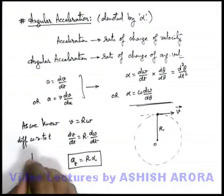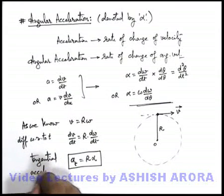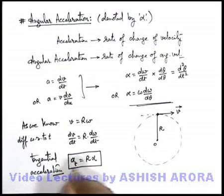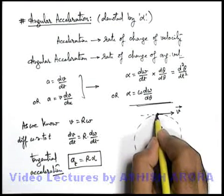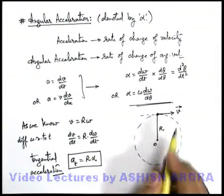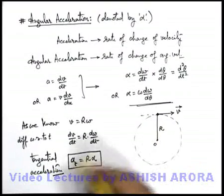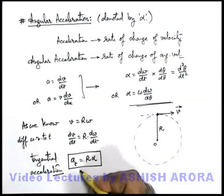This tangential acceleration, a_t, equals r·alpha. This is a new term — we are going to study about tangential acceleration in detail soon. We are calling it tangential acceleration because it is an acceleration acting along the velocity vector. It is the acceleration because of which the speed of the particle is changing, and it acts in the direction of the tangent. That's why we call it tangential acceleration.